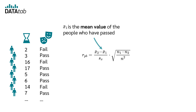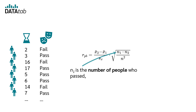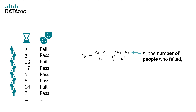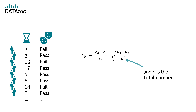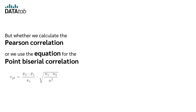In the formula, x̄₁ is the mean value of the people who passed the test, and x̄₂ is the mean value of the people who failed. n₁ is the number of people who passed, n₂ is the number of people who failed, and n is the total number. Whether we calculate the Pearson correlation or use the equation for the point-biserial correlation, we get the same result both times.